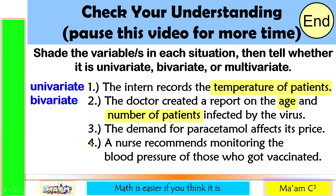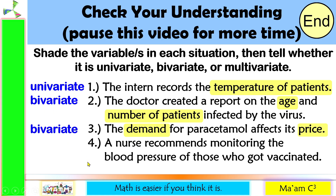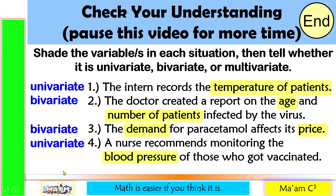Number three: the demand for paracetamol affects its price. We have the demand — whether high or low — as well as the price. We have two variables, so this is bivariate. Last one: a nurse recommends monitoring the blood pressure of those who got vaccinated. We measure the blood pressure — only one variable — so this is univariate.